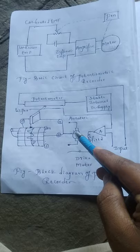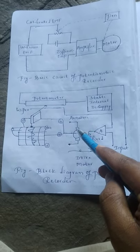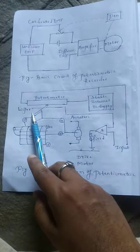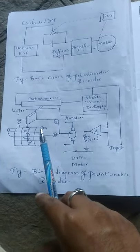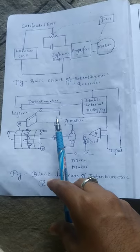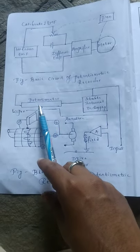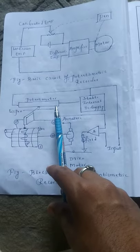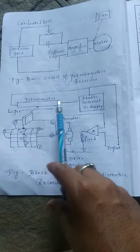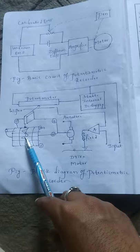This is achieved by mechanically connecting the wiper or variable arm to the armature of the DC motor. The pen is also mechanically connected to the wiper. Hence, when the wiper moves in a particular direction, the pen also moves in synchronism in the same direction, thereby recording the input waveform.